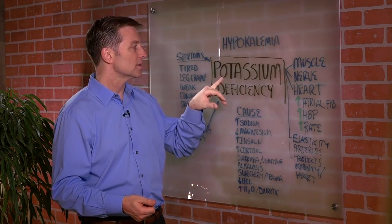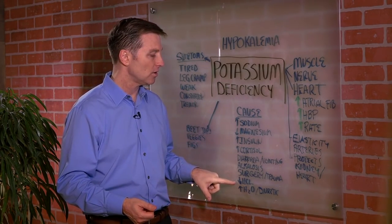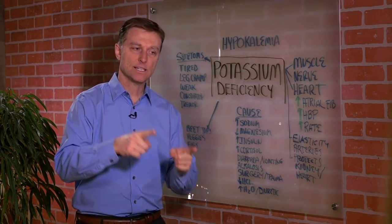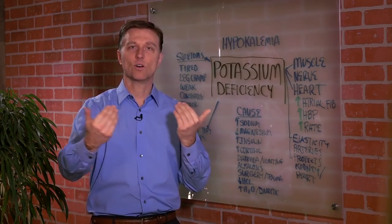So in other words, low potassium can create low hydrochloric acid, but then adding acid back in can help you absorb potassium.